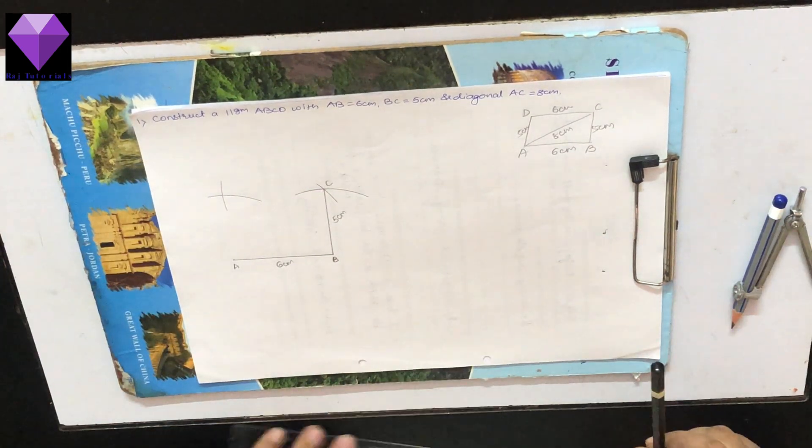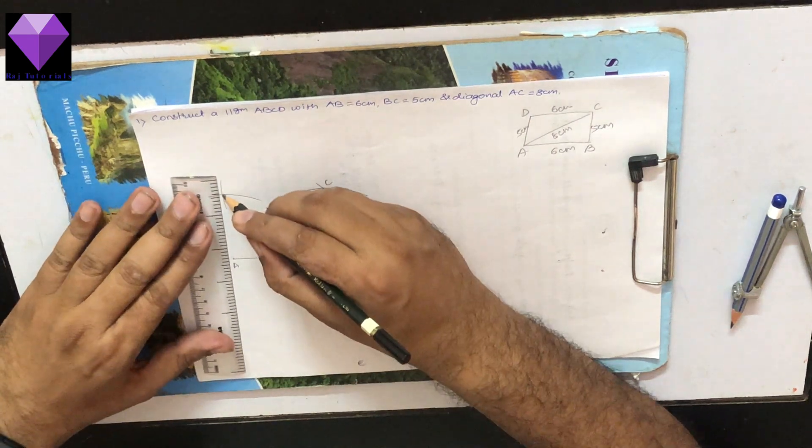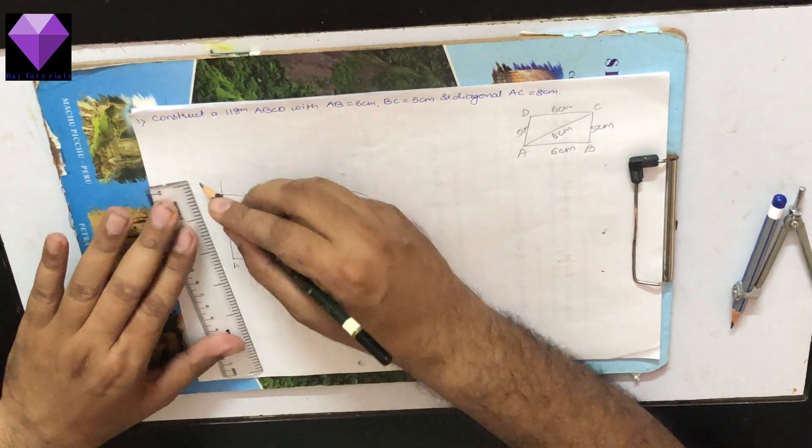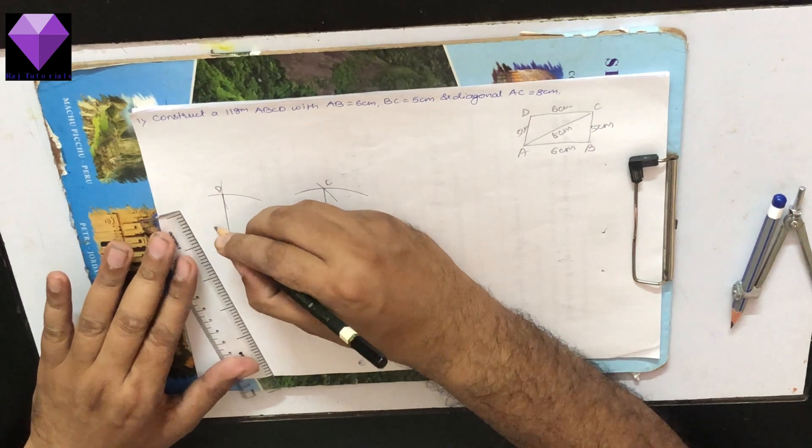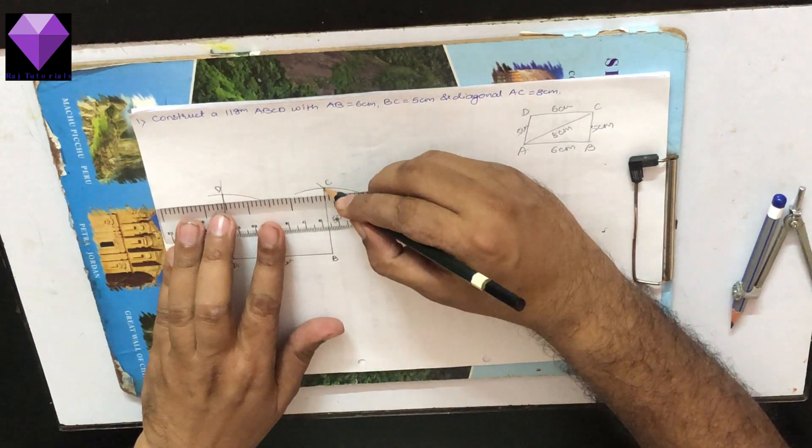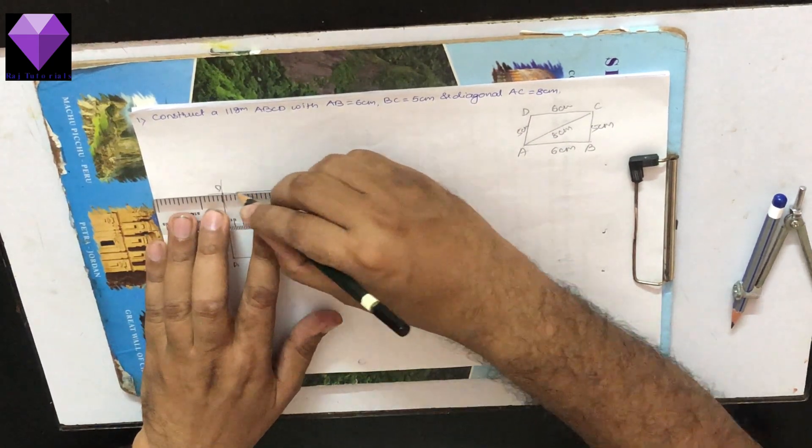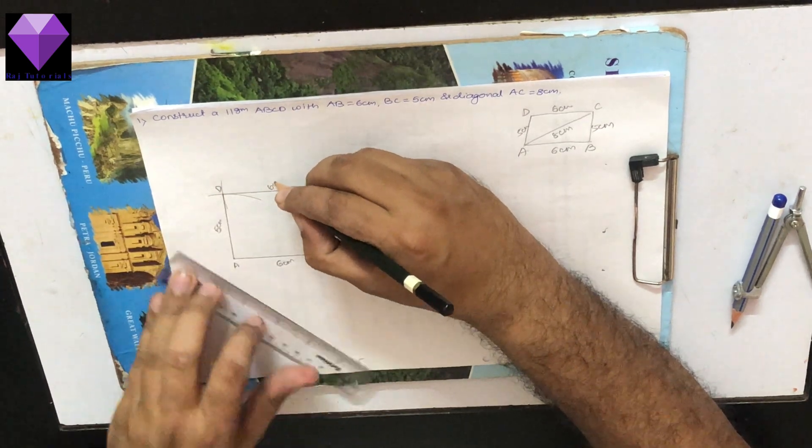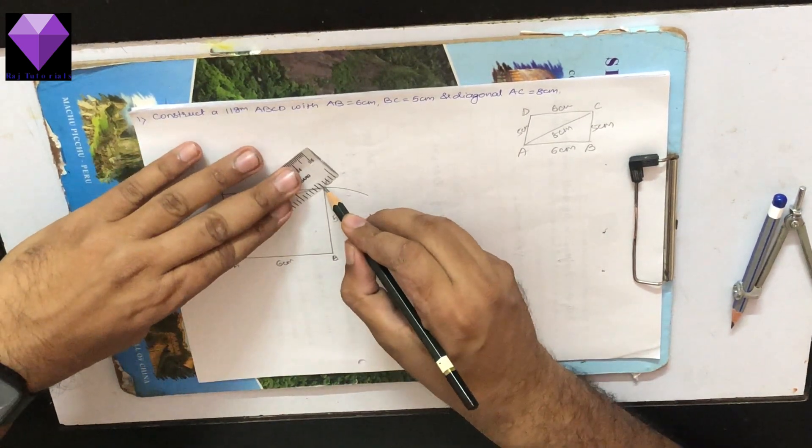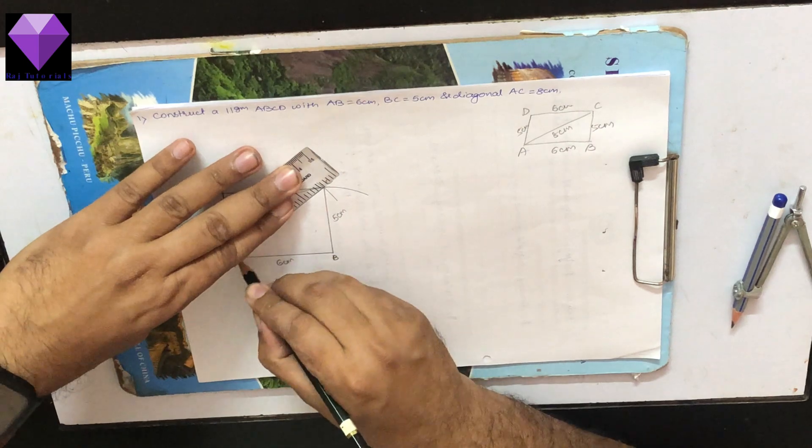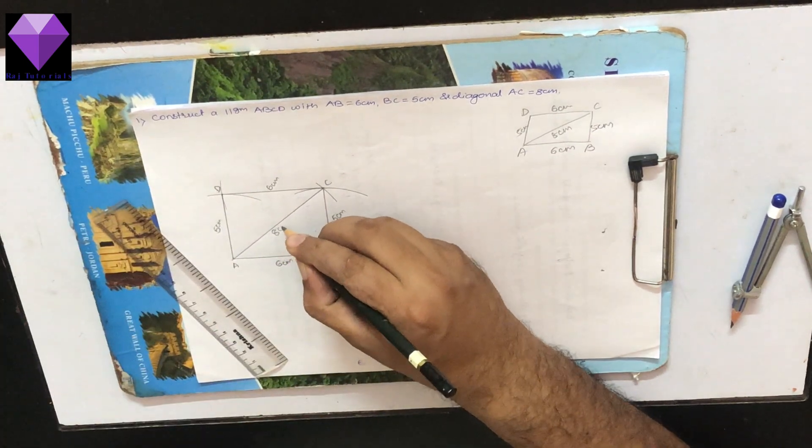Now I am joining all the points. I am joining A and D point, which is 5 cm, I am joining C and D, which is 6 cm, and I am joining A and C, which is already given to me as 8 cm.